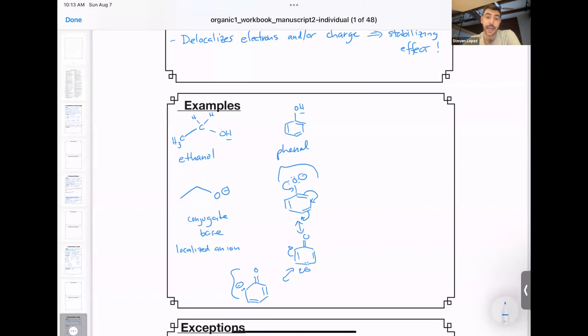This resonance effect is a lot stronger than that of an inductive effect, which we covered in the last episode. So when we compare the pKas, you can see really substantial differences. The pKa of ethanol is 16, and the pKa of phenol is 10. So it's a million-fold increase in acidity by simply putting a phenol ring next to that OH group.